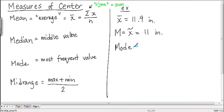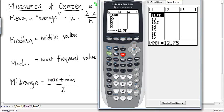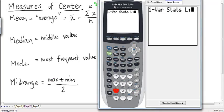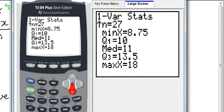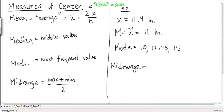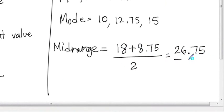So our mode here is 10, 12.75, and 15. We have three modes. And the midrange, you can use your calculator. So let's again calculate one variable statistics on L1. You can use your calculator to get the max and the min. So the min is 8.75, and the max is 18. That is 26.75 divided by 2, which is 13.375 inches.